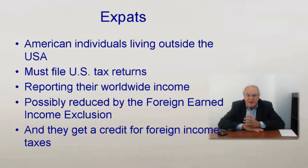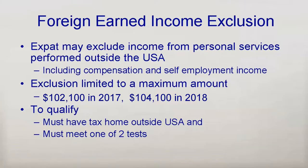If they've paid foreign income tax, they get a foreign tax credit. In addition, expats can exclude a certain amount of income earned from working outside the US. The amount that can be excluded is limited to a fixed dollar amount for each day they qualify for the exclusion. An expat can also exclude the cost of housing in excess of 16% of this exclusion limit.